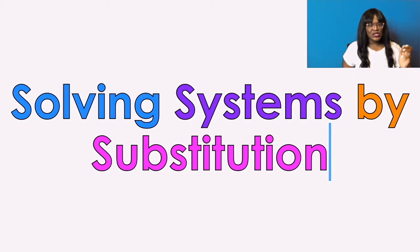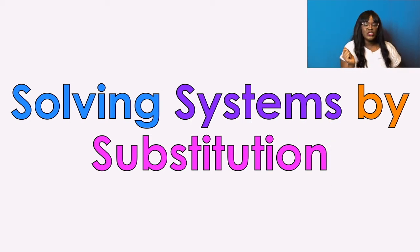Welcome to solving systems by substitution. In this video, I'm going to go through the same six examples from the graphing systems video, because we want to make connections. We already know that the whole point of solving a system is to find where the two lines meet. You know what that looks like visually, but how do you find the same answer doing it on paper by hand? Because sometimes graphs are too big.